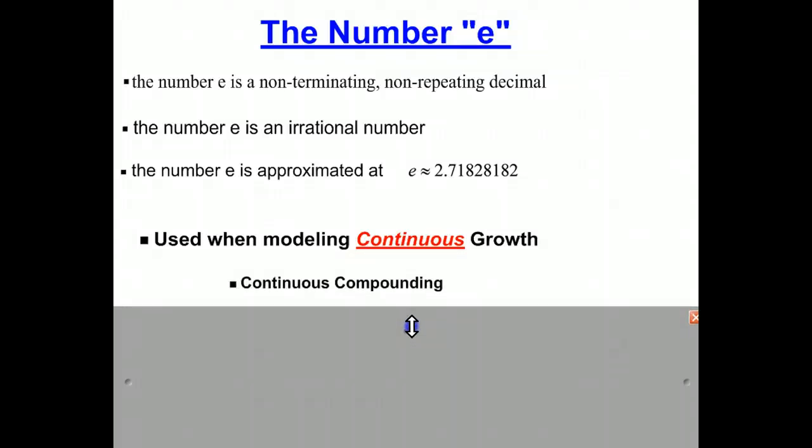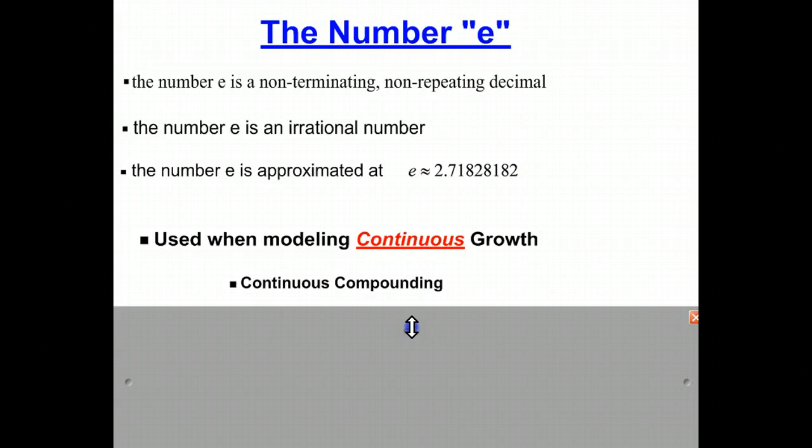So we'll use it when we do continuous compounding. You put money in the bank, and instead of calculating the interest quarterly, or monthly, or daily, or every hour, or every minute, or even every second, we're calculating it so frequently we can't talk about the time intervals. That is what we call continuous compounding.